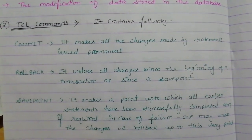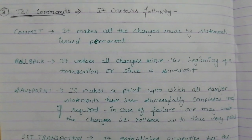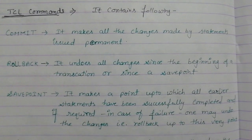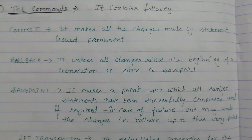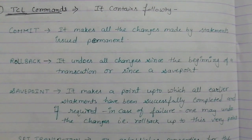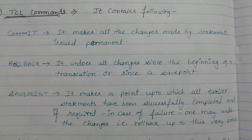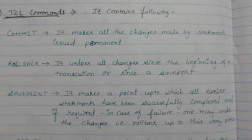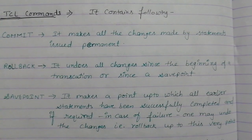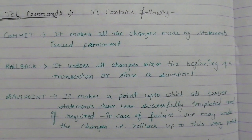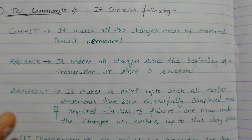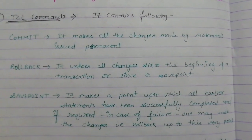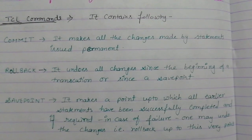Another TCL command is rollback. Suppose you have completed 10 lines, and on the 9th line you made an error. You want to keep the 8th line as it is, so you will use rollback — meaning the 9th and 10th lines will be erased, and you will add new data in their place.